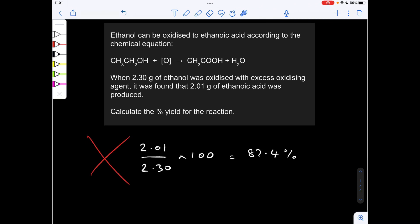So the first thing I'm going to do is talk you through the classic mistake. I see this a lot as an A-level chemistry teacher. So a student would literally just look at the two numbers in the question, 2.01 from 2.30, and just express that as a percentage. So the answer would be that, but unfortunately that is completely wrong.